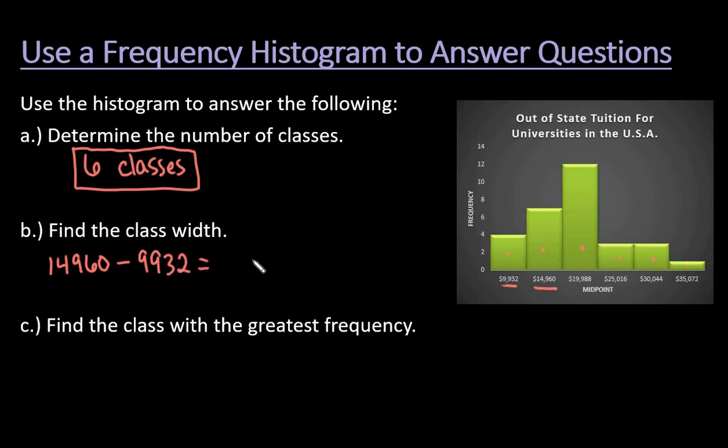I already found this difference, but you could just find the difference between those. It ends up being 5,028. So our class width is 5,028. That's what we are counting by to go from one to the next.